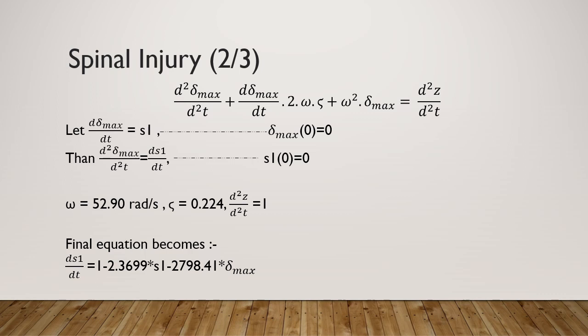Let's first convert your second-order equation into first-order. Let us consider a variable dσ_max/dt equal to s1. Then d²σ_max/dt² will become ds1/dt. The σ_max at t=0 is 0.